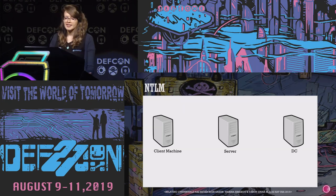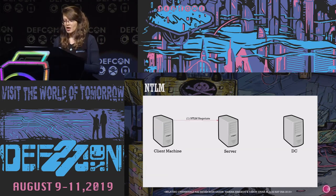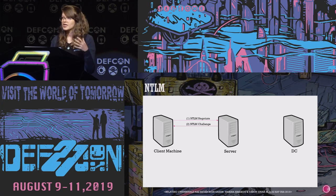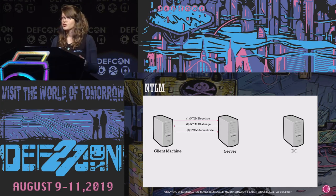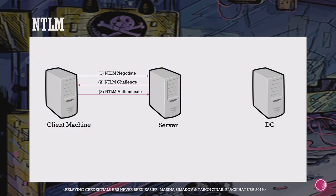Let's see the flow of the NTLM protocol. Say we have a user who wants to authenticate against a domain server. The client sends an NTLM negotiate message to the server, the server responds with a challenge, and the client encrypts the challenge using the user's password hash and sends it back in the NTLM authenticate message. Since the server doesn't store password hashes, it sends a NetLogon request to the domain controller, which validates and responds with approve or reject.